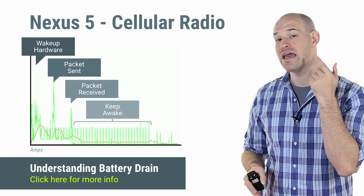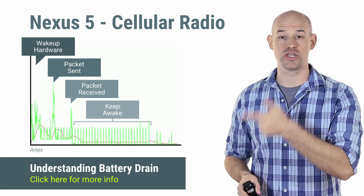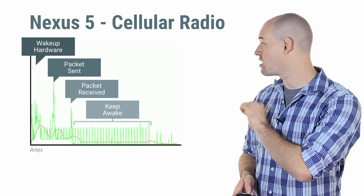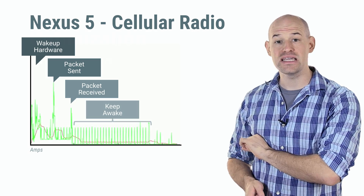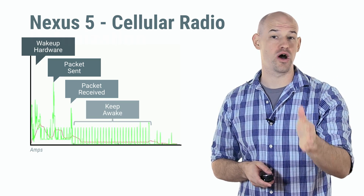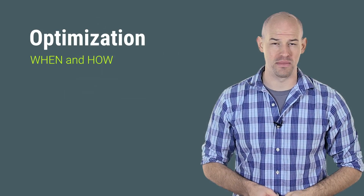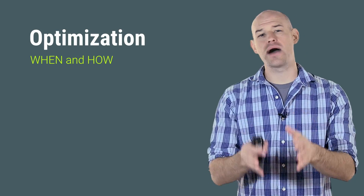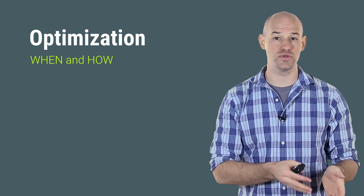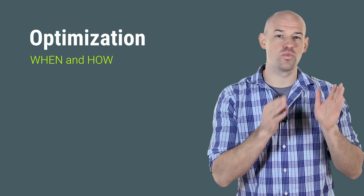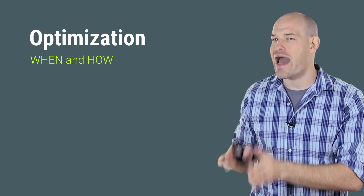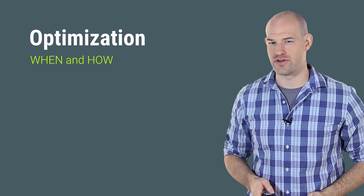There's a high battery drain when the chip first wakes up, some additional spikes when packets are sent and received, and then a continuous draw for the duration of the keep-awake time. Optimizing your networking hardware's battery use has everything to do with when you transfer data and how you transfer data.